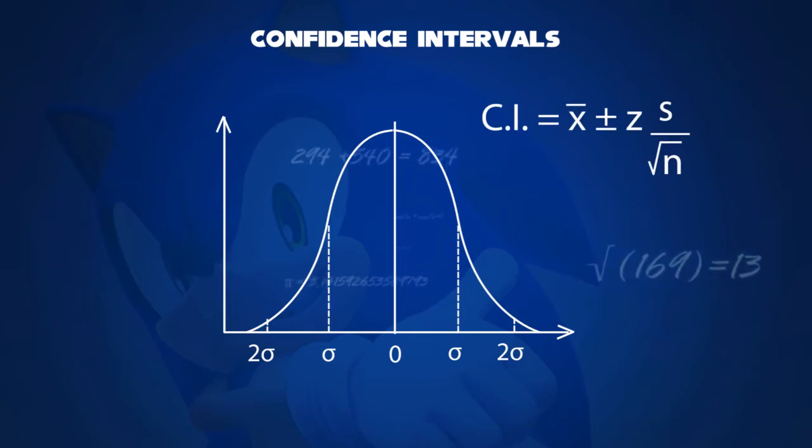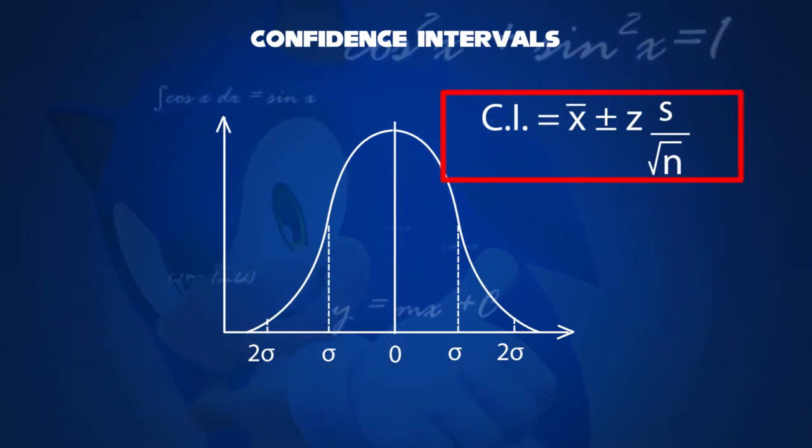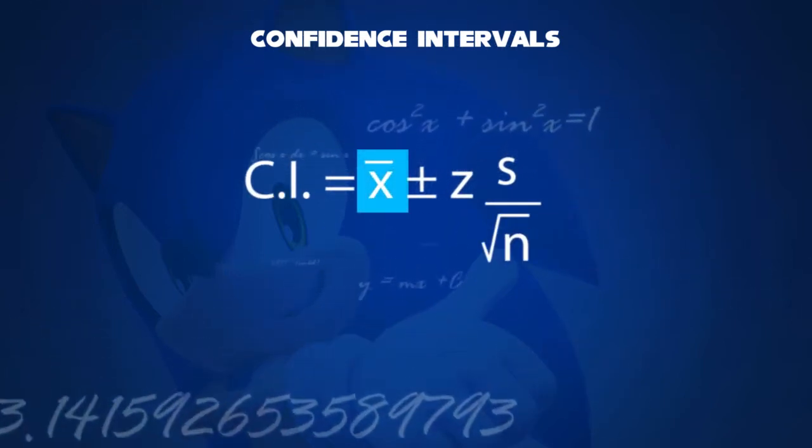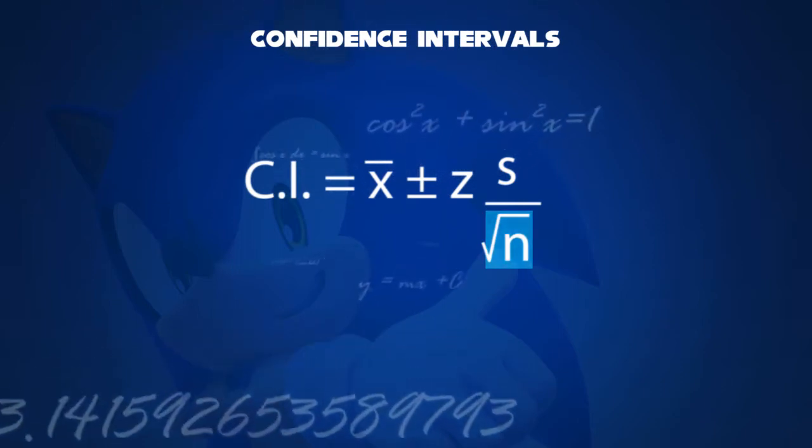The formula for the confidence interval is given by CI equals x bar plus or minus z times s divided by square root of n, where x bar is the sample mean, z is the confidence level value, s is the sample standard deviation, and n is the sample size.